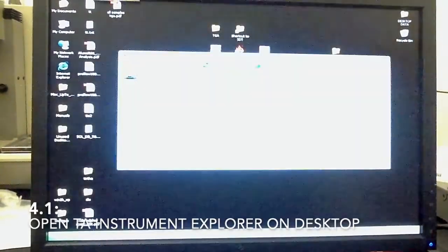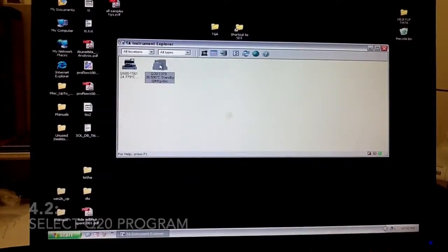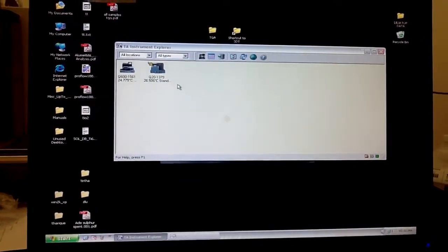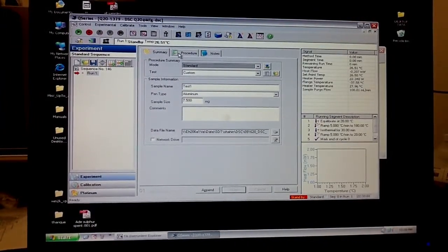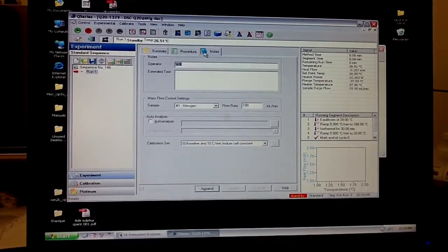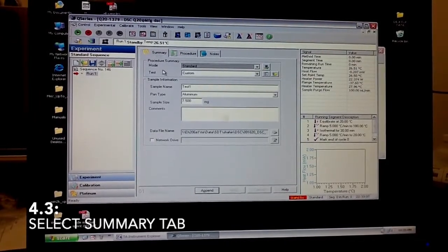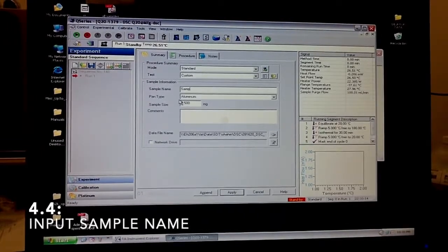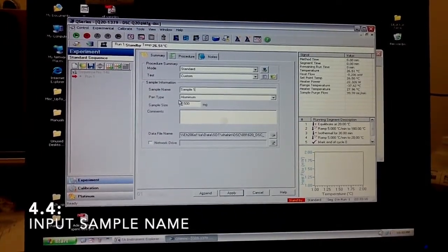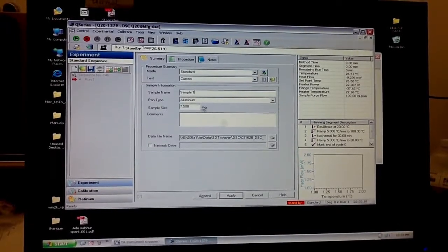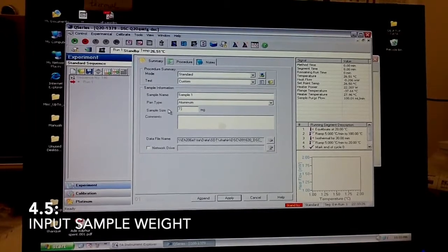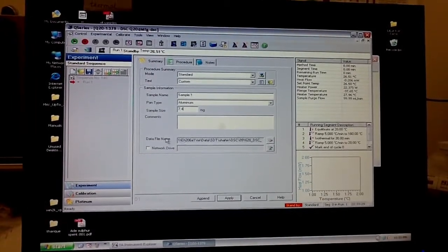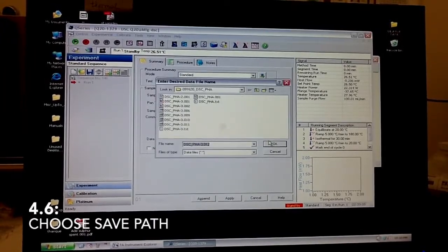The software that I use is this TA Instrument Explorer. And for the DSC, you can use this Q20. Once you're here, you only need to explain yourself with these three tabs here. On the Summary tab, you can use it to put in a sample name. The pan type is AL, and if you have recorded your weight back at the scale, then you input it right here. You also can use this right here to choose your save path.